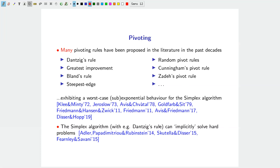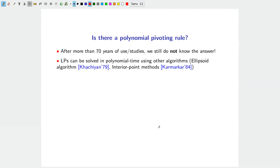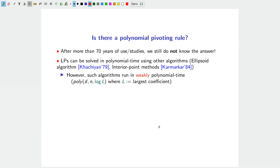Is there a polynomial pivoting rule? After more than seventy years of study, we still do not know the answer. We do know that solving linear programs can be done in polynomial time via other algorithms — the ellipsoid algorithm or interior point methods. So one could ask: why do we care so much about analyzing the simplex specifically?